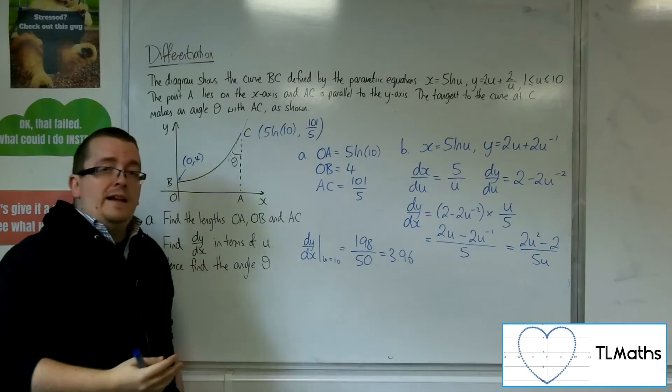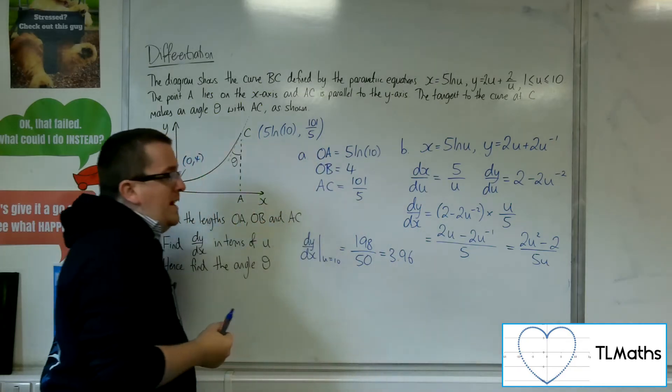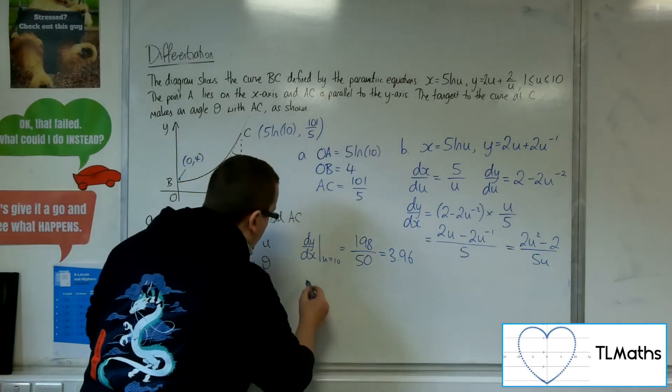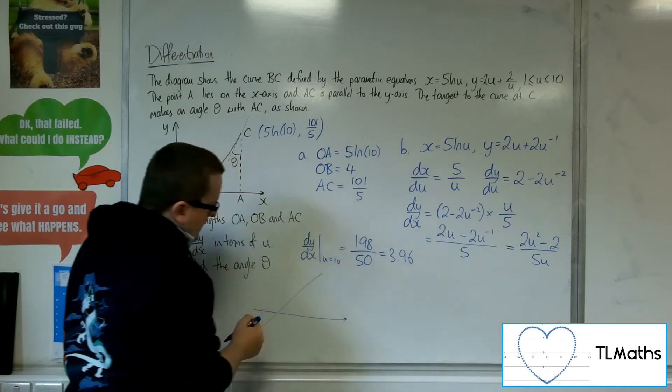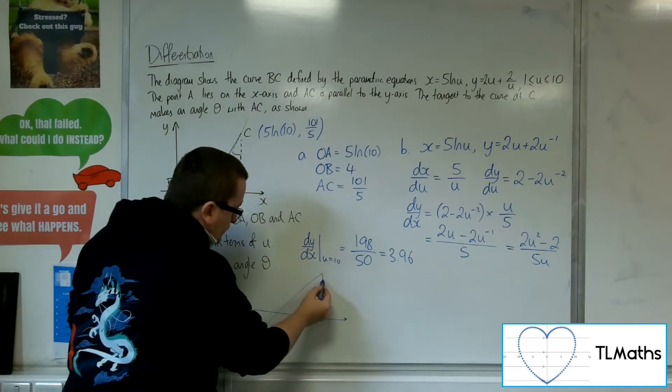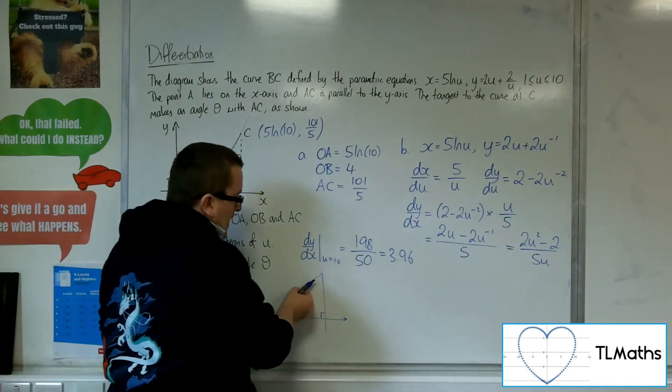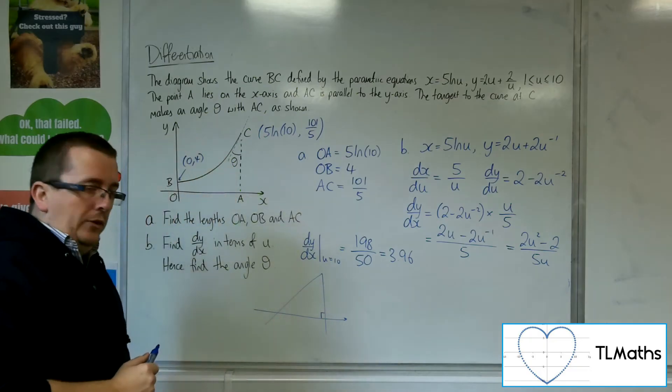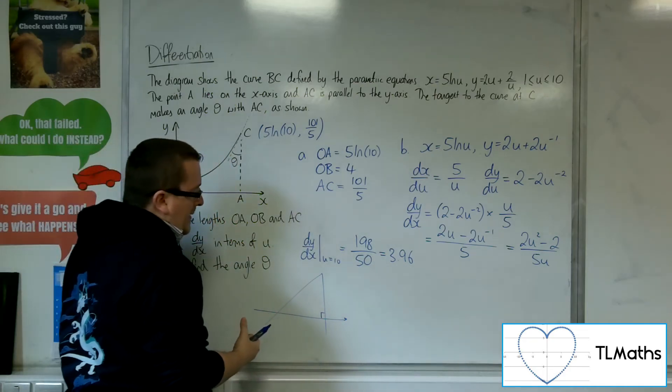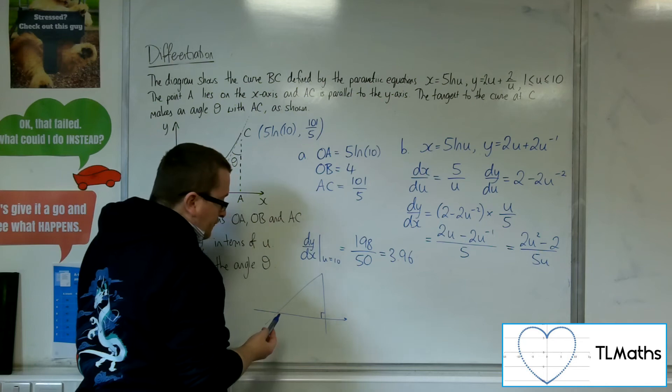Now how am I going to use that to find the angle theta? Well, if I know the gradient of the curve, the gradient of the line at that point, remember, I draw an axis here. So let's imagine that's my line coming down. This will make a right angle triangle. I know the gradient of that line is 3.96. Now gradient is just difference in y divided by difference in x. So the difference in the y coordinates divided by the difference in the x coordinates.